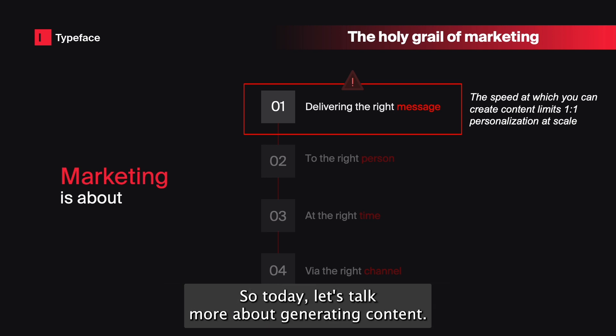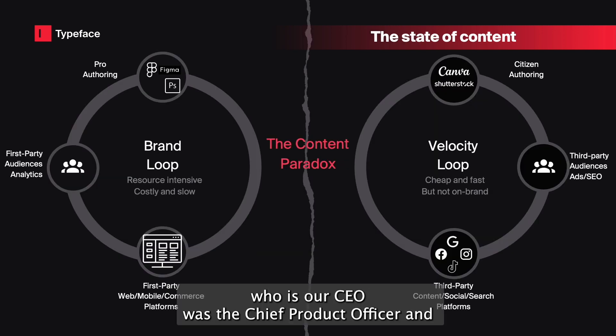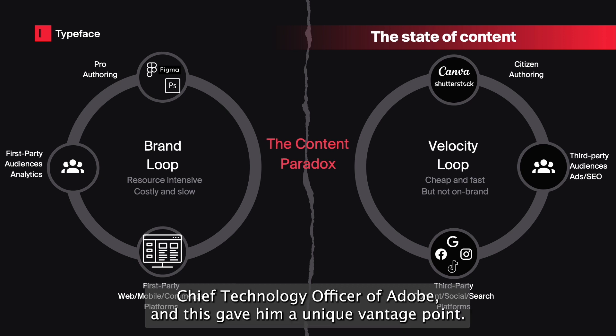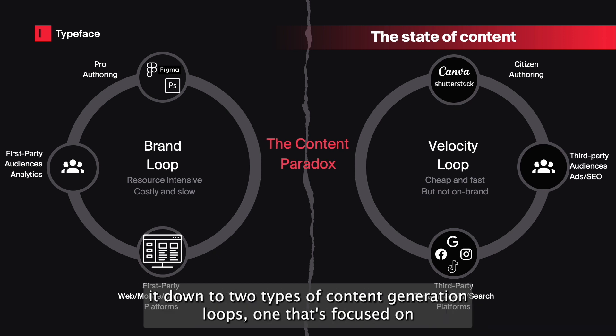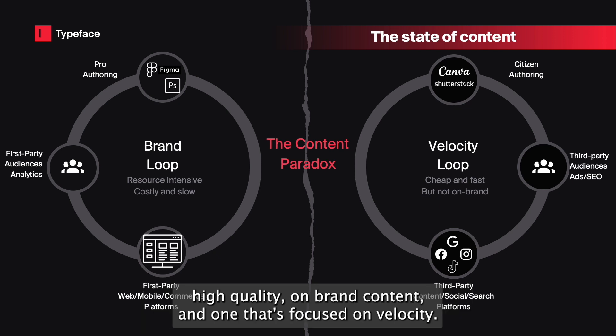So today, let's talk more about generating content at scale. Taking a step back, Abhay, who is our CEO, was the Chief Product Officer and Chief Technology Officer of Adobe, and this gave him a unique vantage point. Through hundreds of conversations with CMOs, we synthesized it down to two types of content generation loops: one focused on high quality on-brand content, and one focused on velocity.